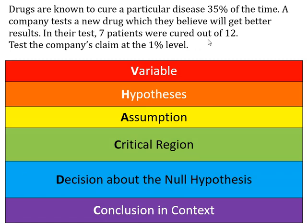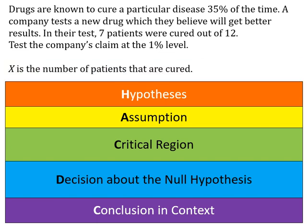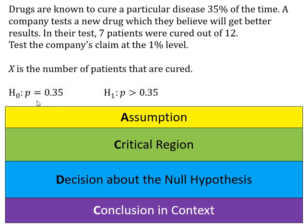Let's look at one more example. Drugs are known to cure a particular disease 35% of the time. A company tests a new drug which they believe will get better results. In their test, seven patients were cured out of 12. Test the company's claim at the 1% level. First, write down the variable: X is the number of patients cured. The null hypothesis is p = 0.35 — nothing has changed. The alternative hypothesis is p > 0.35, since they believe results will be better.